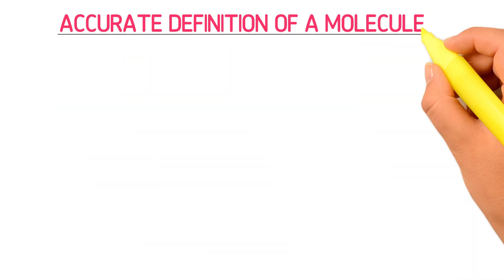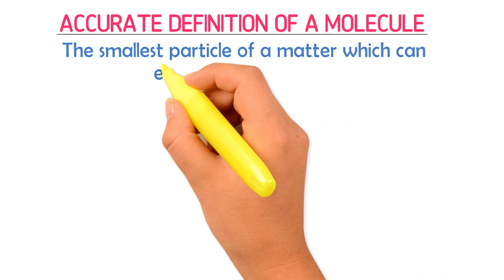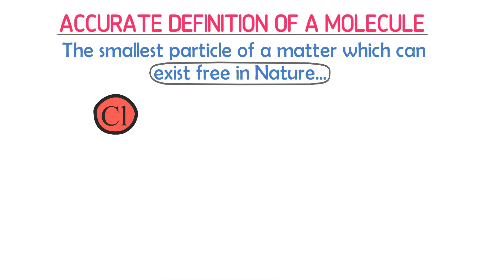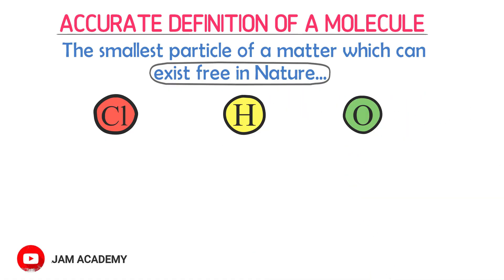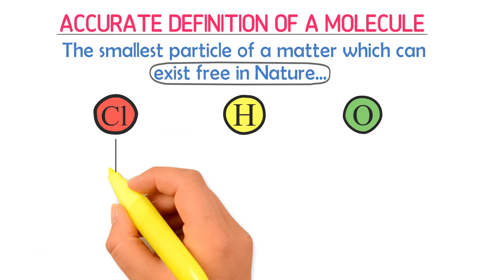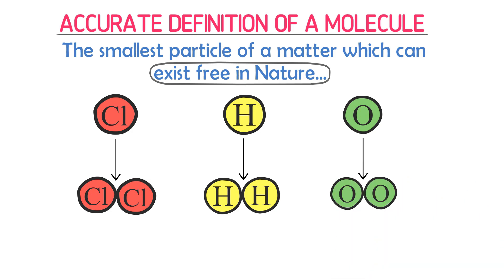The second and most accurate definition of a molecule is: the smallest particle of matter which can exist free in nature is termed as a molecule. What is meant by 'exist free in nature'? Consider a single atom of chlorine, hydrogen, and oxygen — they all cannot exist freely in nature. Chlorine atoms exist in combined form as a chlorine molecule. Hydrogen atoms exist in combined form as a hydrogen molecule. And oxygen atoms exist in combined form as an oxygen molecule.